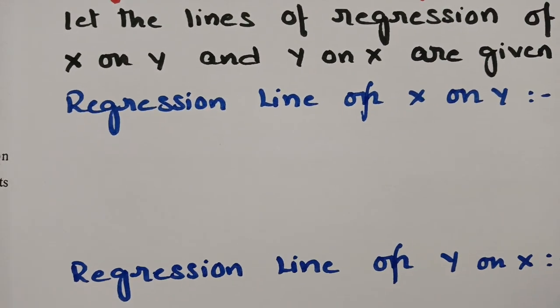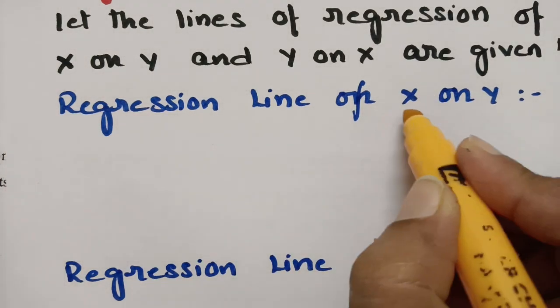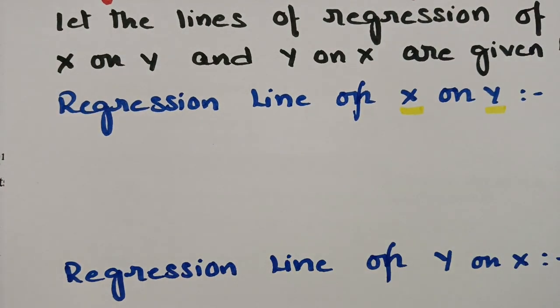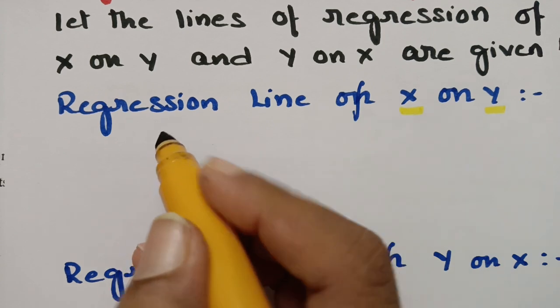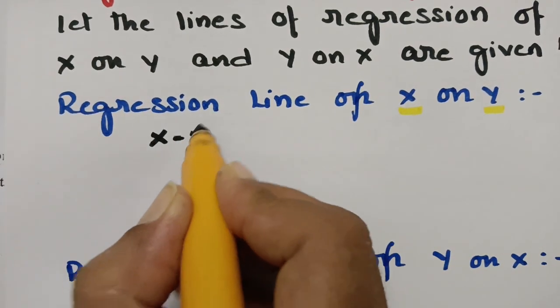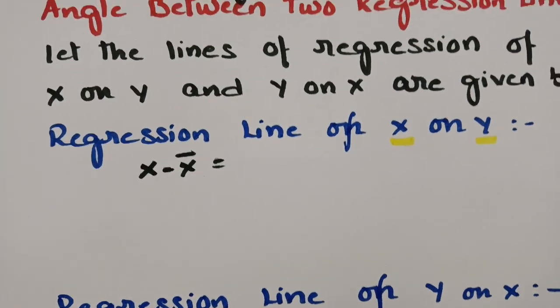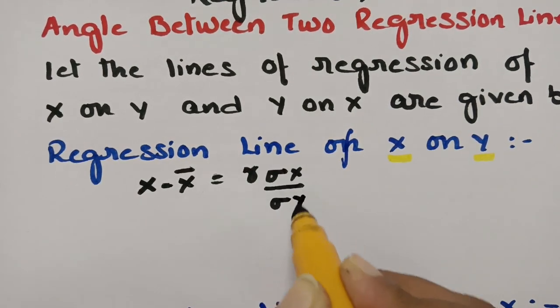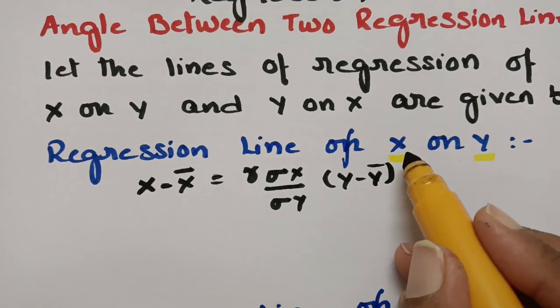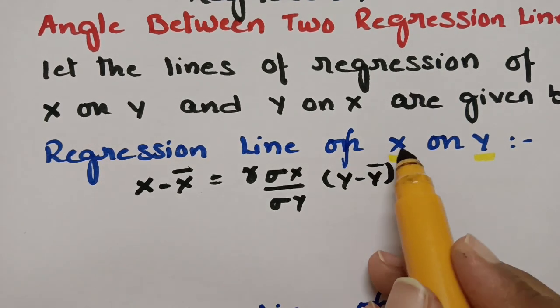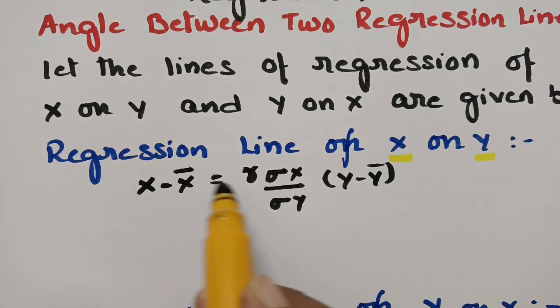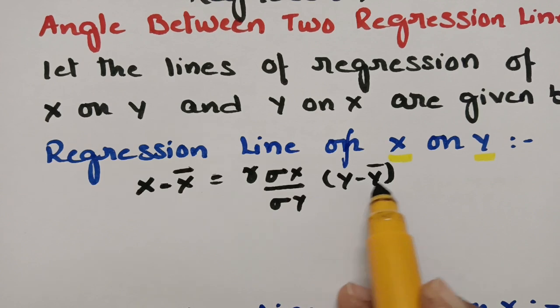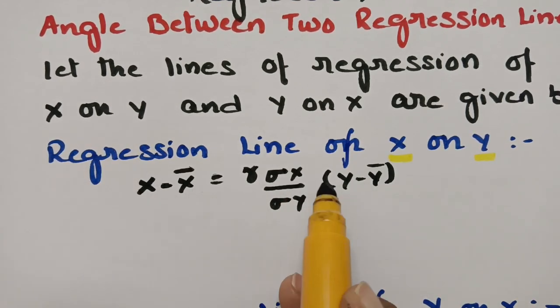Let me start with the equation of the regression line of y on x and x on y. First I am considering the regression line of x on y. If it is x on y, we have to start with x and end up with y. It is very easy to understand: this is x minus x̄. The first one is x minus x̄. It is x on y, so r times of sigma y over sigma x into y minus ȳ.